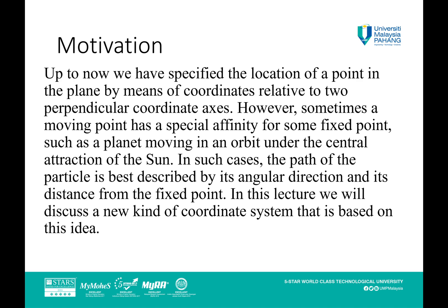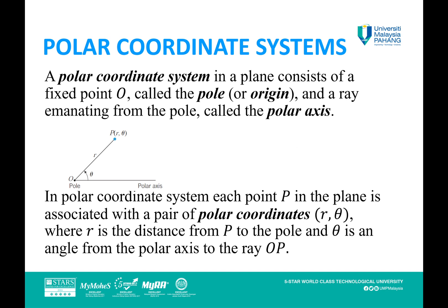A polar coordinate system in a plane consists of a fixed point O called the pole or origin, and a ray emanating from the pole called the polar axis.